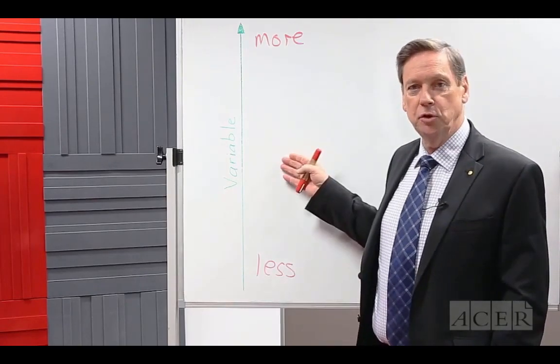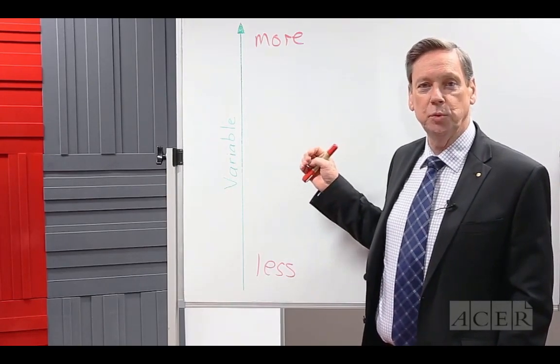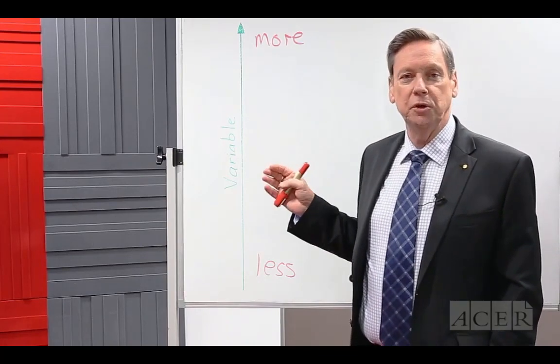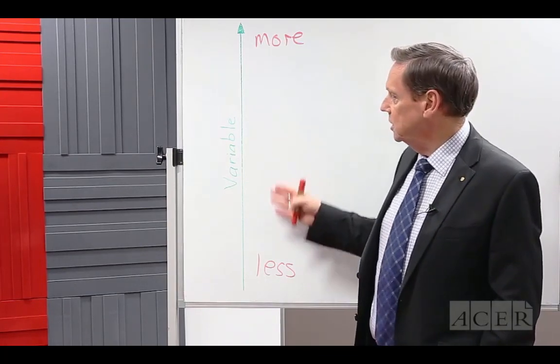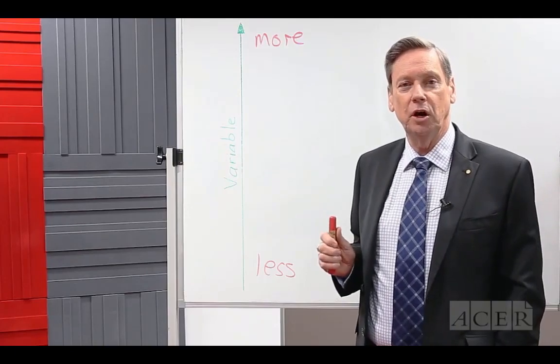In fact, L.L. Thurston, back in 1928, said that the very idea of measurement implies a linear continuum of some kind.